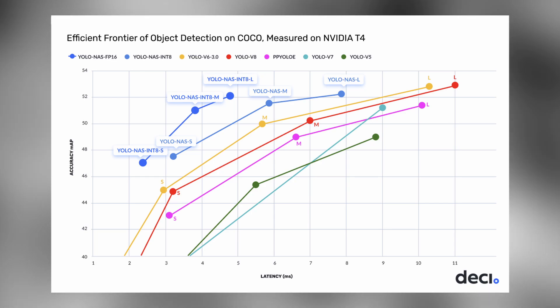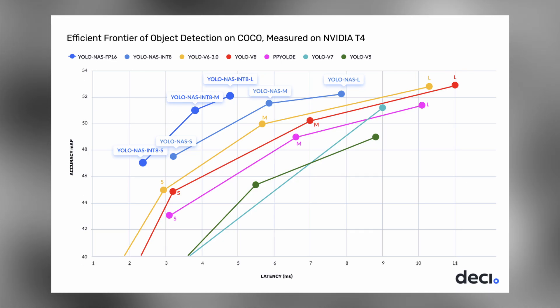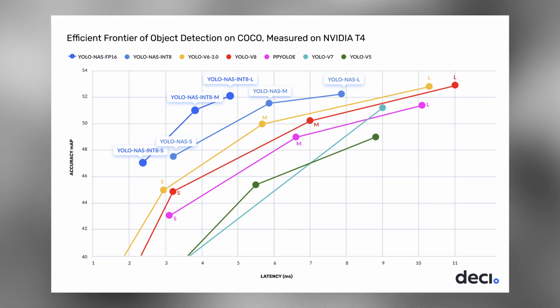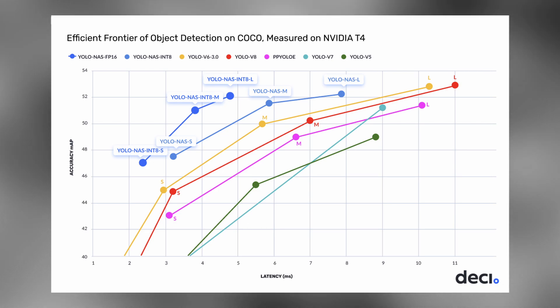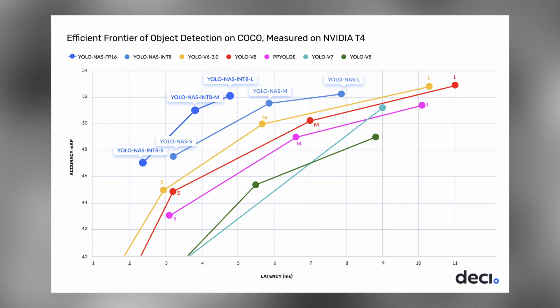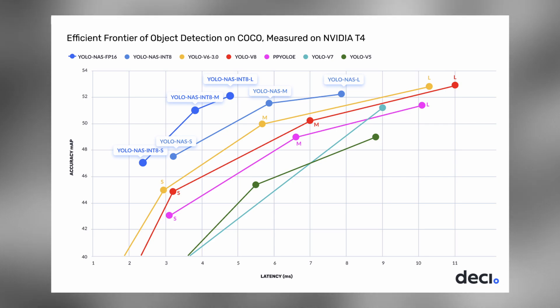Before we dive into the code, let's take a step back and let me tell you a bit more about the model itself. According to DECI, which is the company behind YOLO NAS, this model is the new state-of-the-art when it comes to real-time object detection, most notably beating YOLO v6 and YOLO v8 when it comes to accuracy and speed.